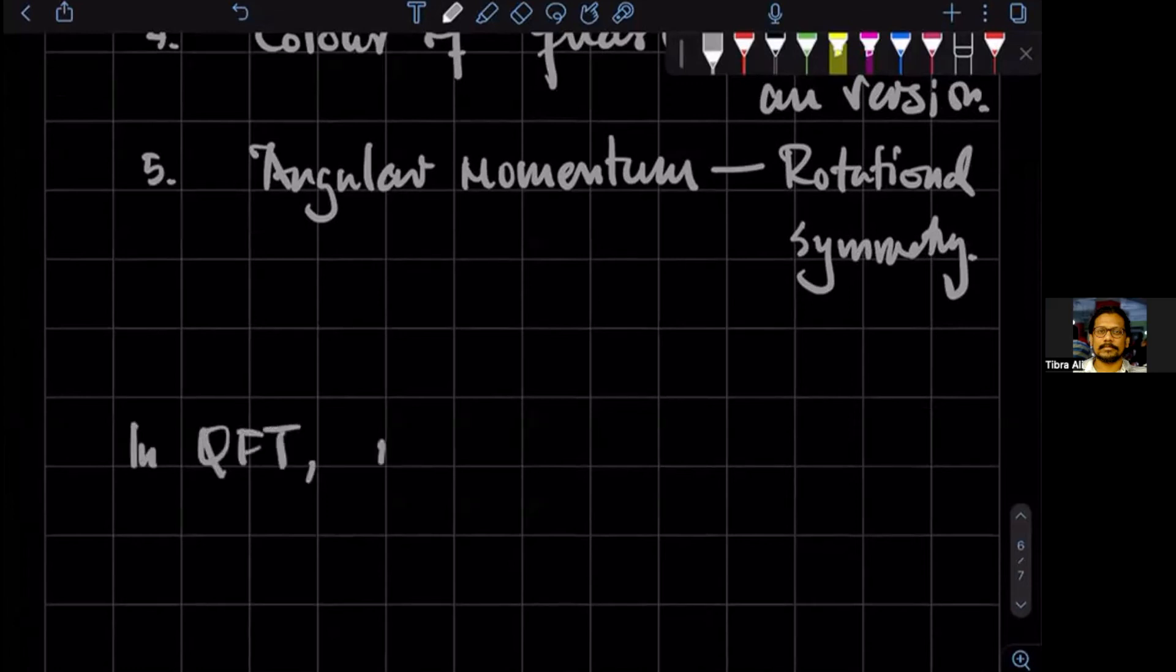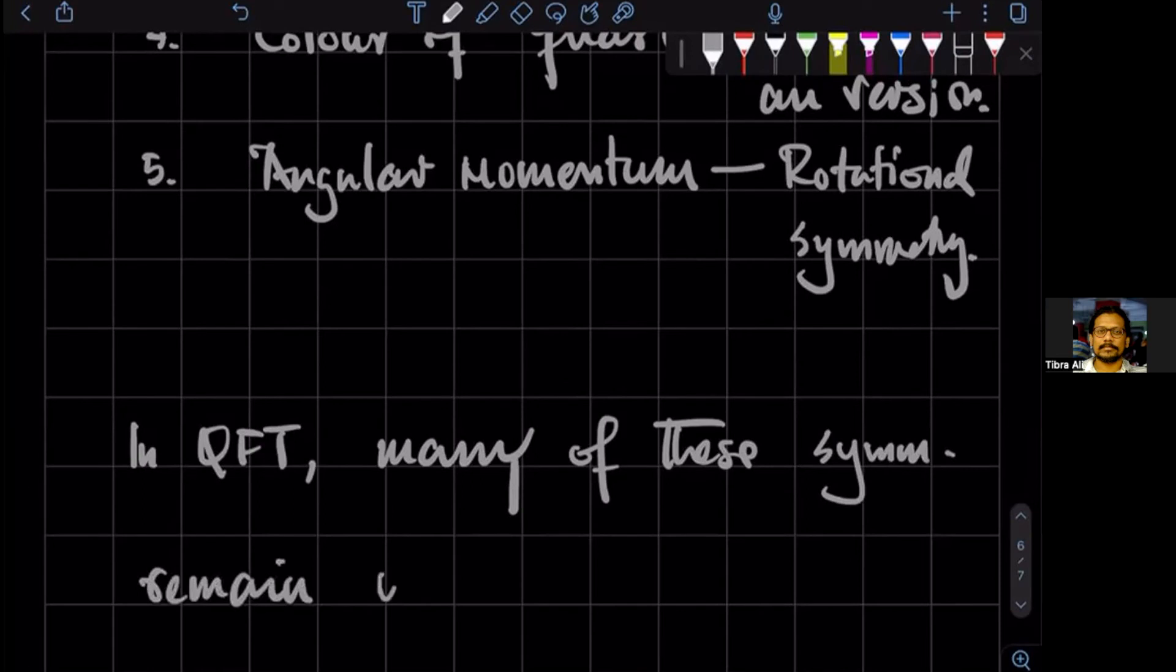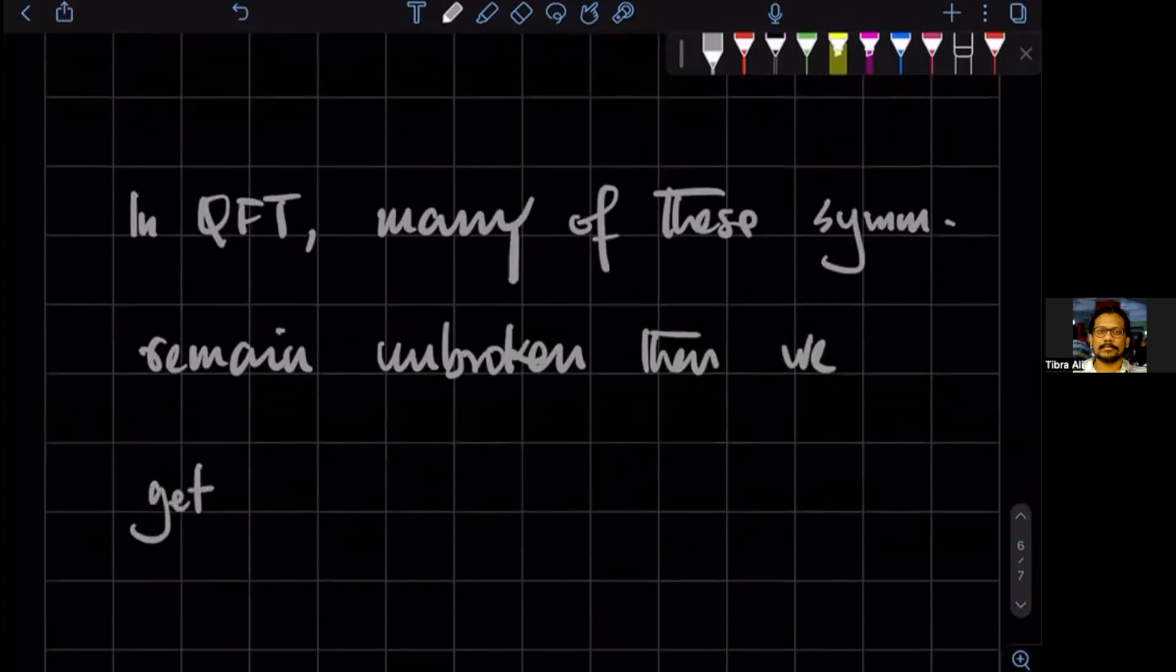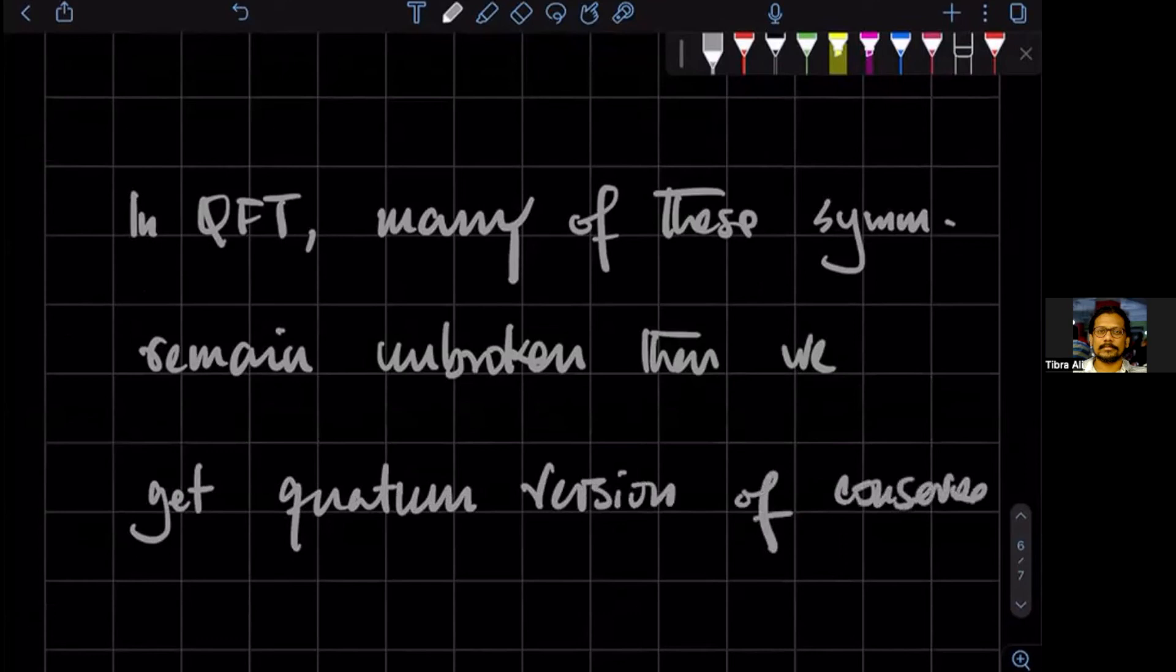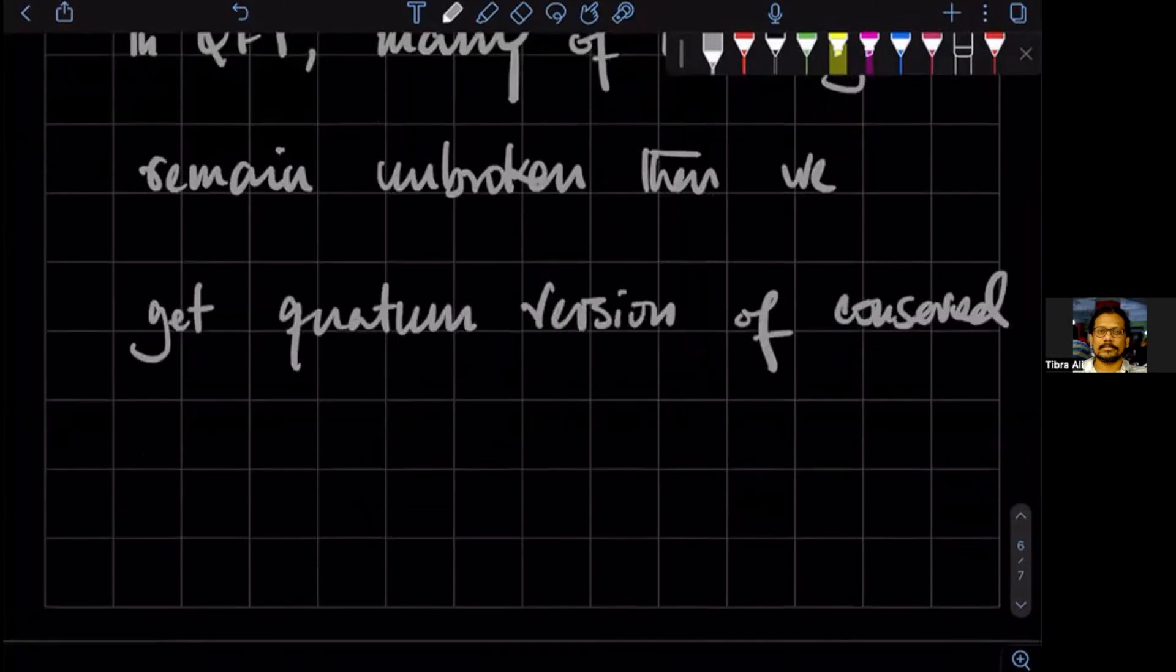In quantum field theory, many of these symmetries are unbroken. Symmetries remain unbroken. And then we get quantum version of conserved charges.